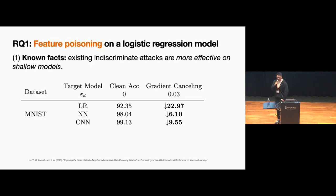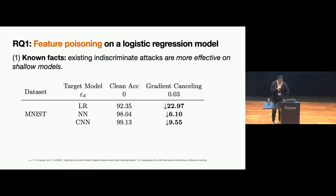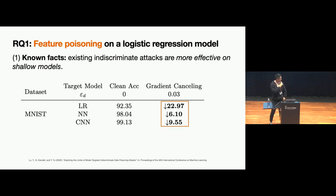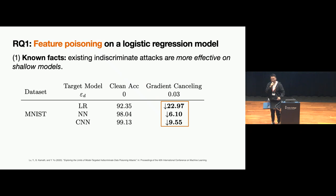Let's take a step back from fine-tuning to normal supervised learning or end-to-end training, where we have results for existing attacks from previous papers. For indiscriminate attacks, shallower neural networks are easier to poison than deep neural networks. For example, for logistic regression, the accuracy drop is dramatic at only 3% of poison data — almost 23% — whereas for neural networks and convolutional neural networks, this number is much lower, indicating shallower networks are much easier to poison.